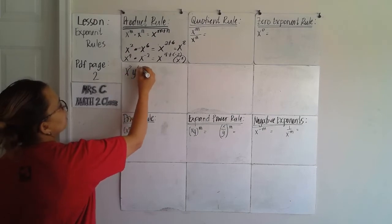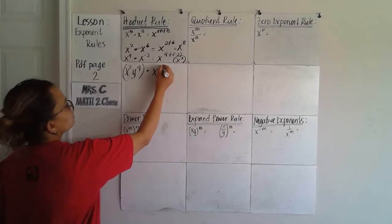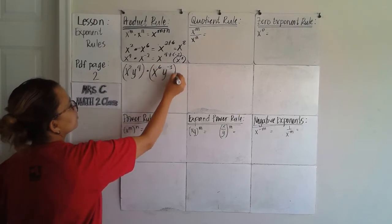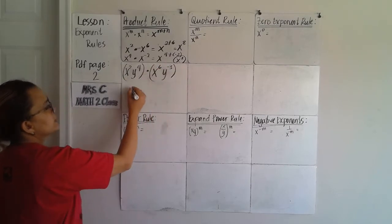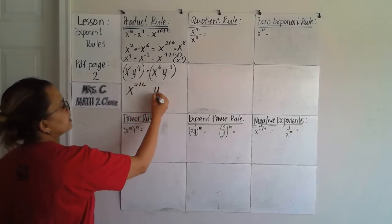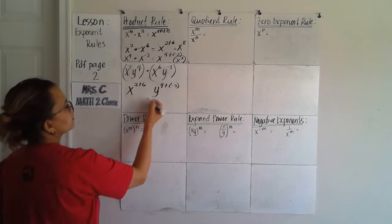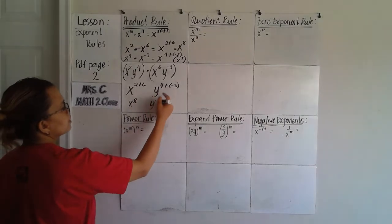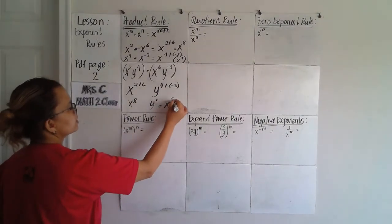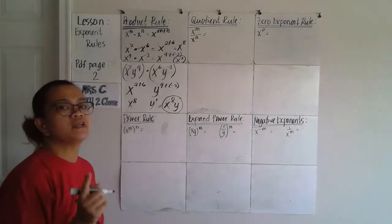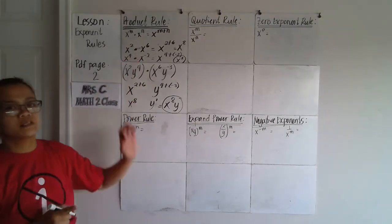Another example: x squared, y to the 4th, multiplied by x to the 6th, y to negative 3. Copy the base and add the exponent. 2 plus 6 equals 8, and 4 plus negative 3 equals 1 for y. So the answer is x to the 8th power, y — since an exponent of 1 can be left implied.